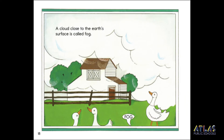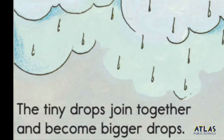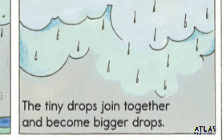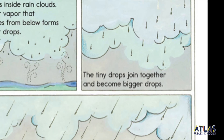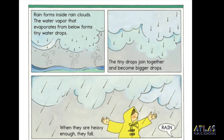A cloud close to the Earth's surface is called fog. Rain forms inside rain clouds. The water vapor that evaporates from below forms tiny water drops. The tiny drops join together and become bigger drops. When they are heavy enough, they fall. Rain!